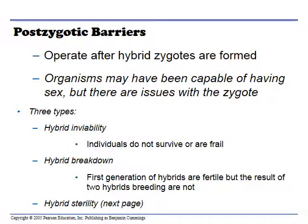Those were all prezygotic barriers. Now for postzygotic barriers — mating has occurred, but it's not going to be successful as an evolutionary mechanism. We may get a hybrid like a mule that survives, but it cannot mate. Sometimes the hybrids don't survive at all or are frail. Sometimes hybrids show breakdown where the first generations are fertile but the second generations are not. All these examples keep the original species as pure individual species with no crossbreeding.